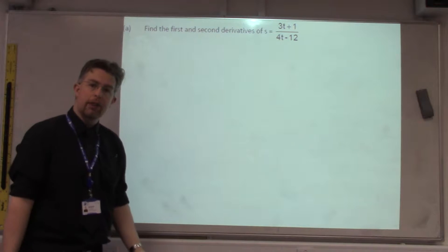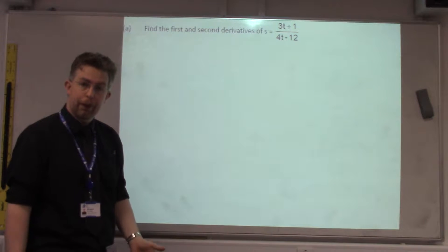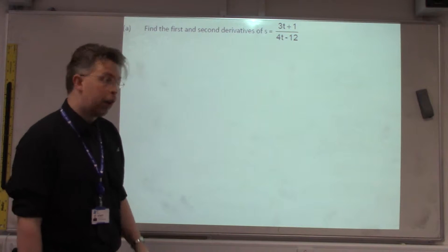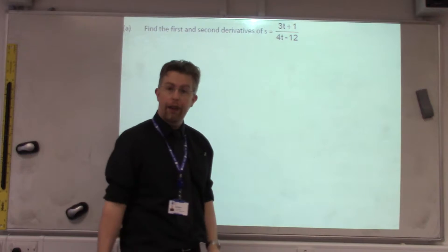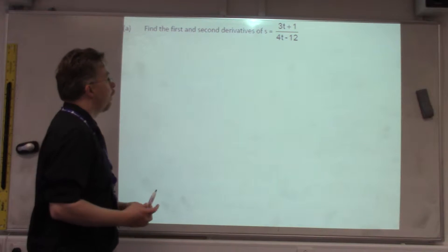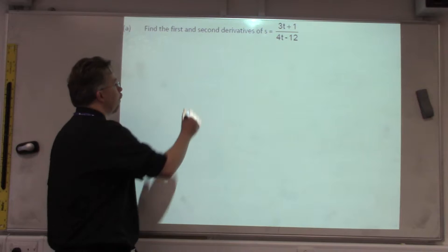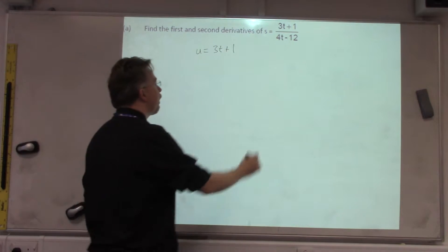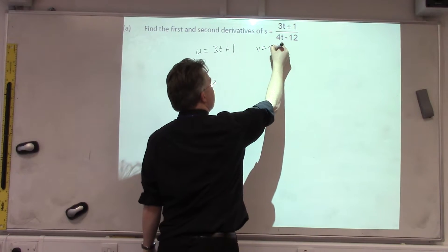Now, in the last section, we did something called the Product Rule for functions multiplied together. Now, we're going to use something called the Quotient Rule, which is for functions that are divided by each other. So, in this case, we would make U equal to the function at the top, and we would make V equal to the function at the bottom.